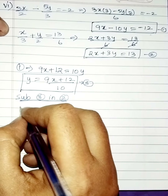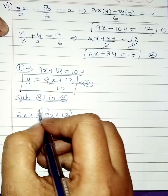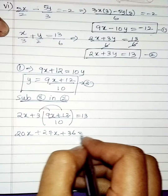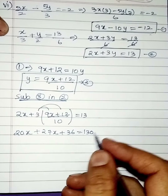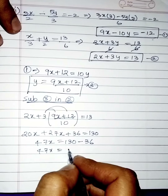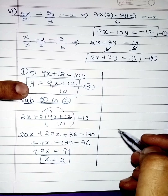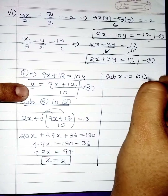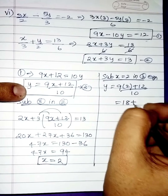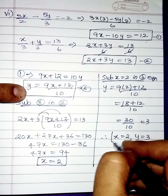Substituting into the second equation: 2x plus 3 times (9x plus 12) divided by 10 equals 13. Multiplying through by 10: 20x plus 27x plus 36 equals 130. Combining: 47x equals 130 minus 36 equals 94, so x equals 94 divided by 47 equals 2. Substituting x equals 2 into the third equation: y equals (9 times 2 plus 12) divided by 10 equals 30 divided by 10 equals 3. Therefore x equals 2, y equals 3 is the final answer.